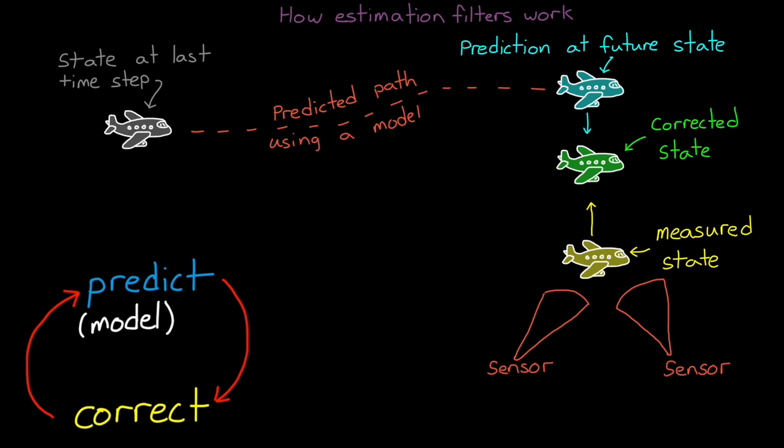This blended result is the output of the filter. This two-step process, predict and correct, is the same whether we're estimating the state of our own system, or we're estimating the state of a remote object we're tracking. However, for a tracked object, one of those steps is not as easy as the other.